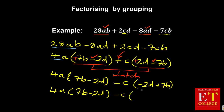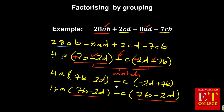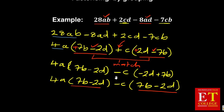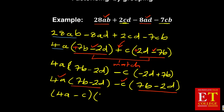Now you can see that the first bracket matches the second bracket, which was the aim. So writing what is outside the brackets together: 4A and minus C. The final answer is (4A minus C)(7B minus 2D).